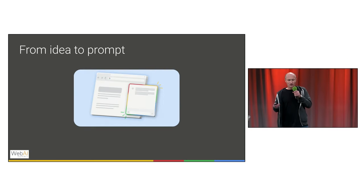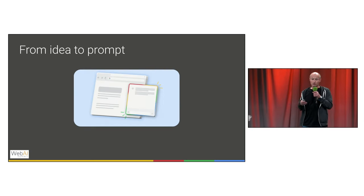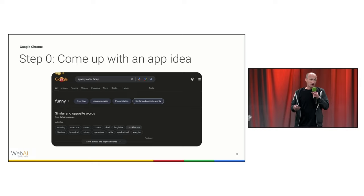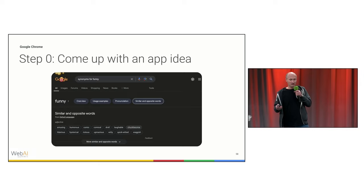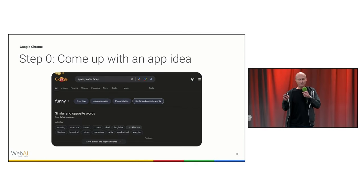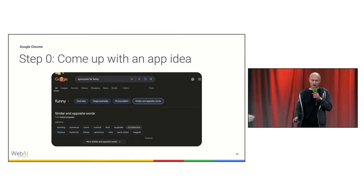Let me tell you how I, as customer zero, approached getting from an idea to a prompt. Remember that in Chrome we're working with Gemini Nano, a comparably small LLM. The zeroth step is always to come up with an app idea. As a non-native English speaker — I'm German — I often search for synonyms on Google. What if I could just ask an AI model locally? And born is the idea of the Synonym Finder.